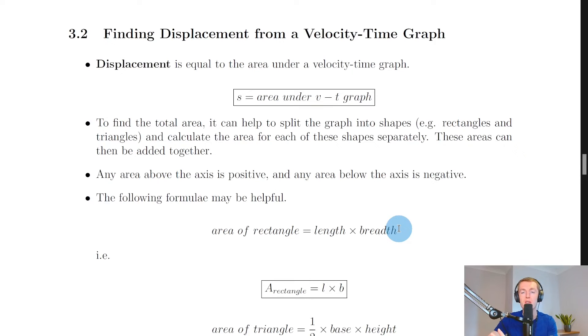There are two main things other than velocity that you can find from a velocity time graph and these are displacement and acceleration. The first one we'll look at is how to find displacement from a velocity time graph and then in the next theory video we'll look at how to determine acceleration from a velocity time graph.